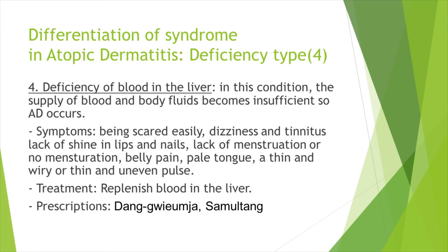Fourth, deficiency of blood in the liver: in this condition, the supply of blood and body fluids becomes insufficient, causing symptoms. Symptoms include dizziness and tinnitus, lack of shine in lips and nails, lack of menstruation or no menstruation, pale tongue, and a thin and wiry or thin and uneven pulse. Dangui umja can be prescribed to replenish blood in the liver.